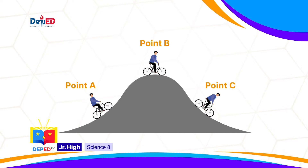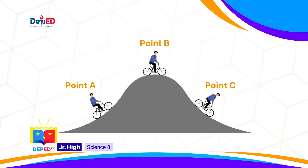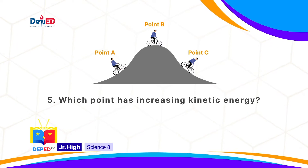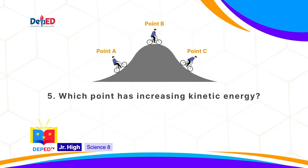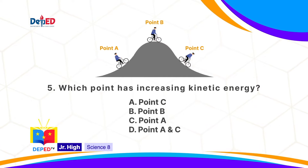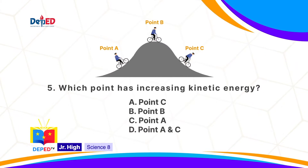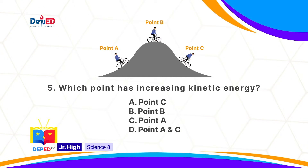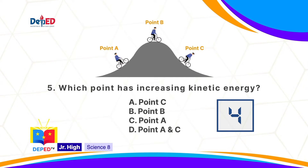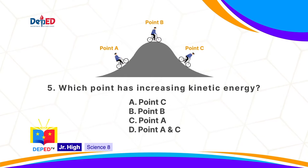For questions 5 and 6, refer to this illustration. Which point has increasing Kinetic Energy? A, point C. B, point B. C, point A. D, point A and C. The correct answer is A: point C.